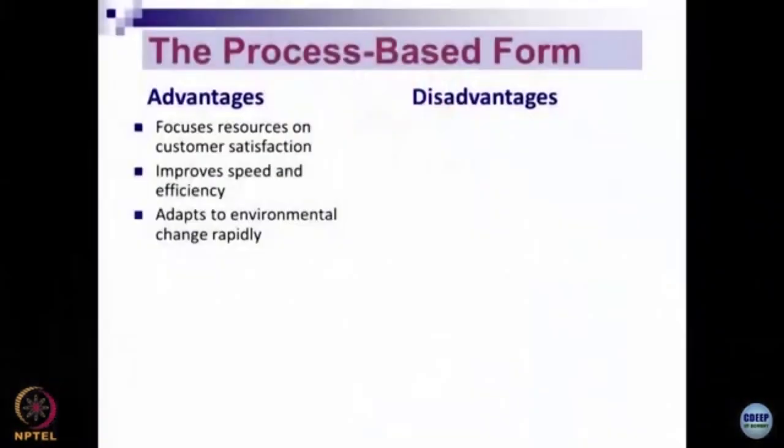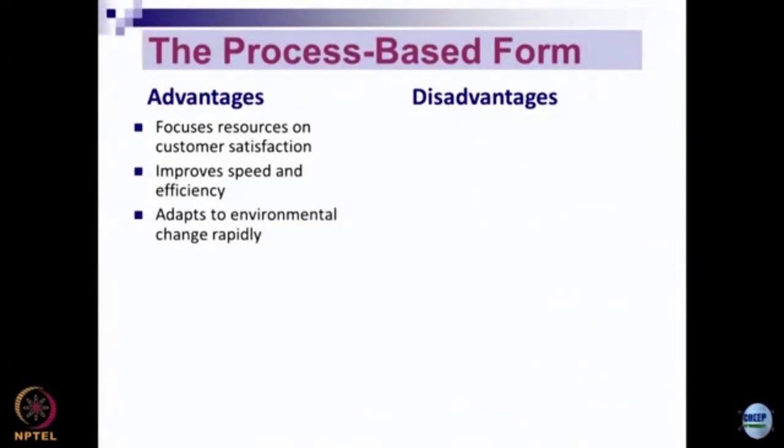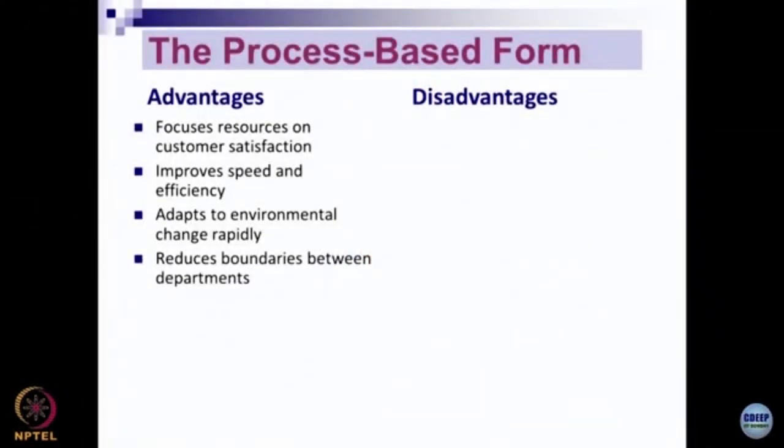Process-based forms of organization are good at adapting to environmental change. Whether it is a political, technological, or regulatory challenge, the organization has to respond. If organized in separate departments, the response may be delayed due to interdepartmental communication requirements. In a process-based structure focused on the customer, the probability of responding rapidly to environmental change is much higher. Process-based structure also reduces boundaries between departments, as the individual identity of each department reduces greatly.